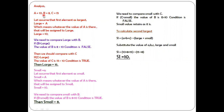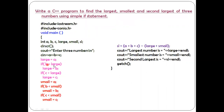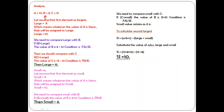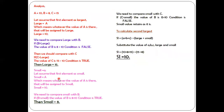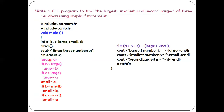The value of b is 8. Is 8 greater than large, which is 10? No — condition false. So large equals b will not execute. Then I check the next condition: if c is greater than large. The value of c is 15, and large is 10. Is 15 greater than 10? Yes — condition true. So large equals c, and the value of c is 15. Now large equals 15.